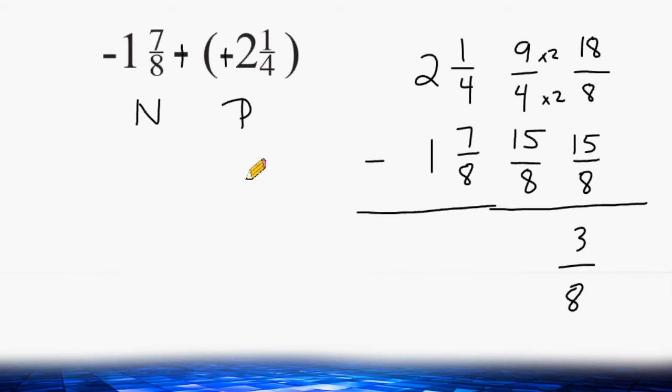The sign we use depends on which value had the larger absolute value. Because 2 and 1 quarter has a larger absolute value than 1 and 7 eighths, we use the sign of 2 and 1 fourth, which is a positive symbol. So our answer is positive 3 eighths.